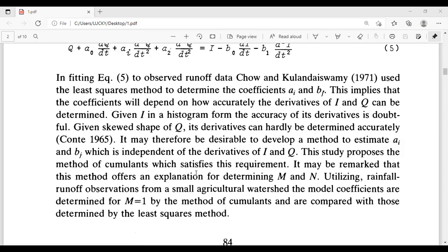It may be remarked that this method offers an explanation for determining M and N. Utilizing rainfall runoff observations from a small agriculture watershed, the model coefficients are determined for M equals 1 by the method of cumulants and are compared with those determined by the least squares method.